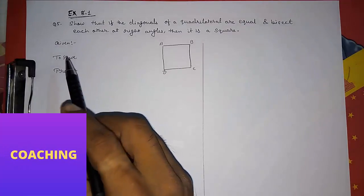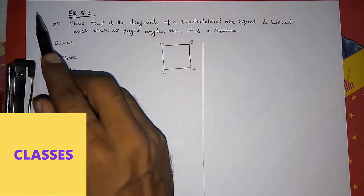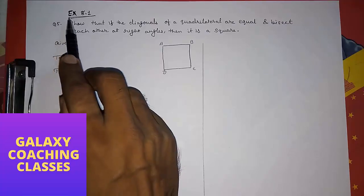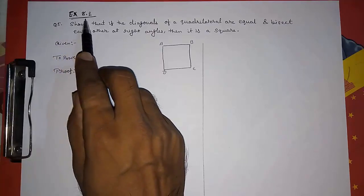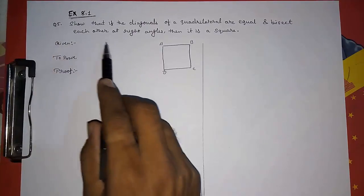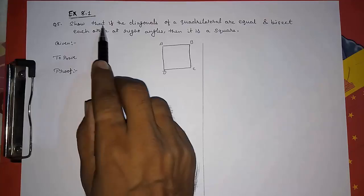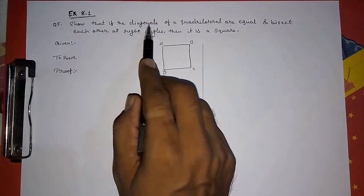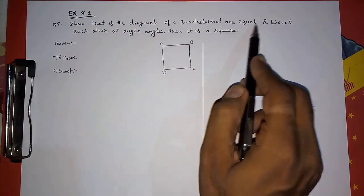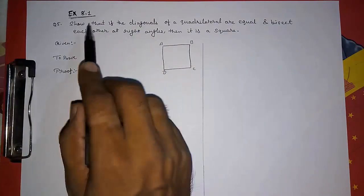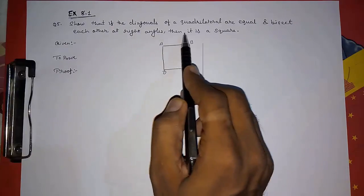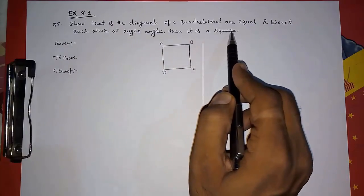Hello friends, today we are going to solve CBSE class 9th maths exercise 8.1 question number 5: show that if the diagonals of a quadrilateral are equal and bisect each other at right angles, then it is a square.